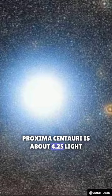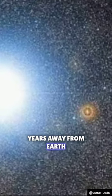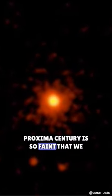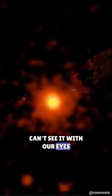Proxima Centauri is about 4.25 light years away from Earth, which means that its light takes more than 4 years to reach us. Proxima Centauri is so faint that we can't see it with our eyes, only with telescopes.